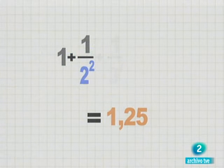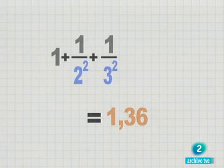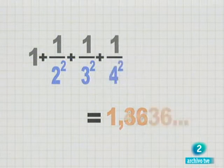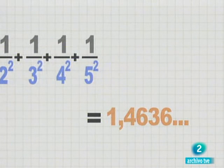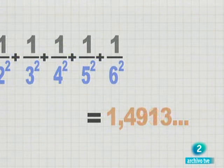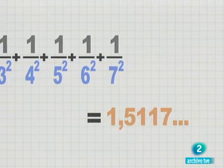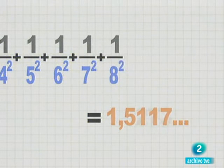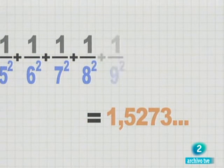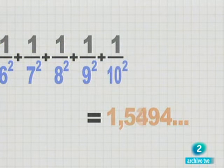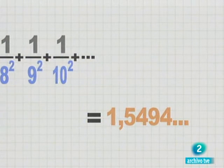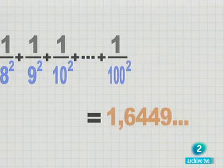¿Qué ocurrirá con esta otra, formada por los inversos de los cuadrados de los números naturales? Euler calculó la suma de los 100 primeros términos hasta encontrar un resultado con más de 20 decimales. Comprobó que se acercaba cada vez más a un número menor que 2, 1,6449.